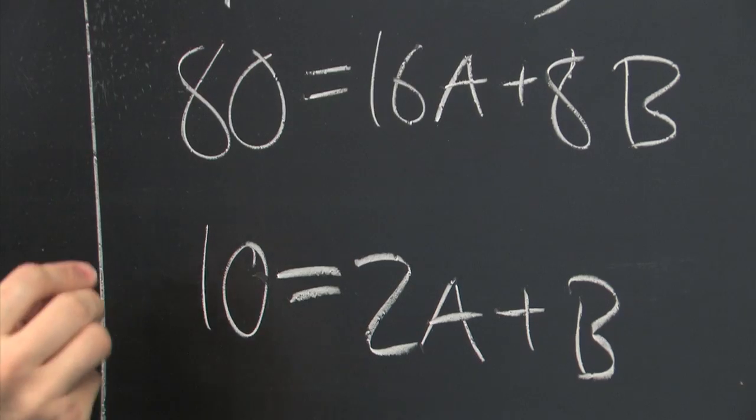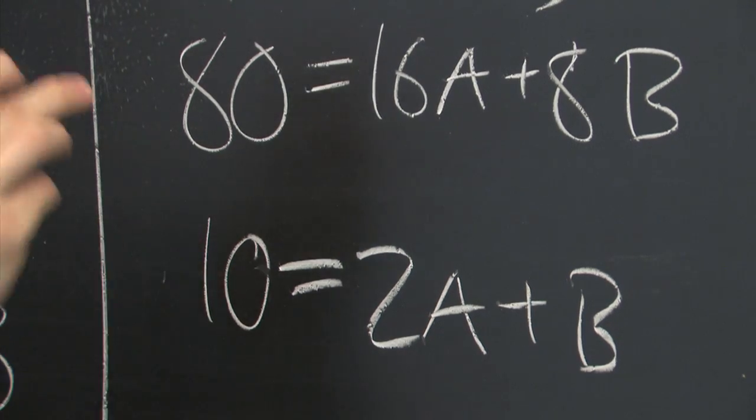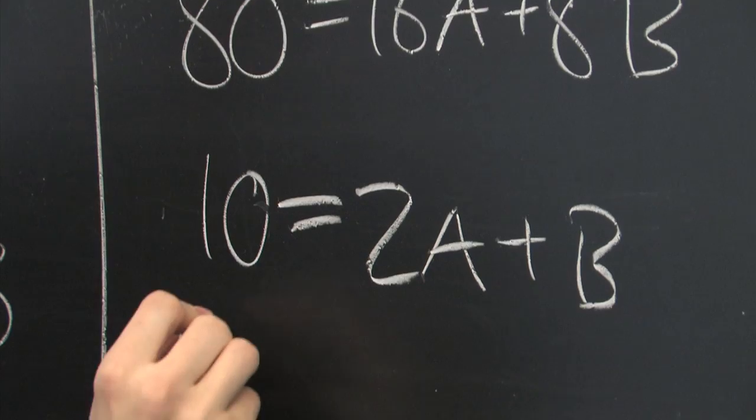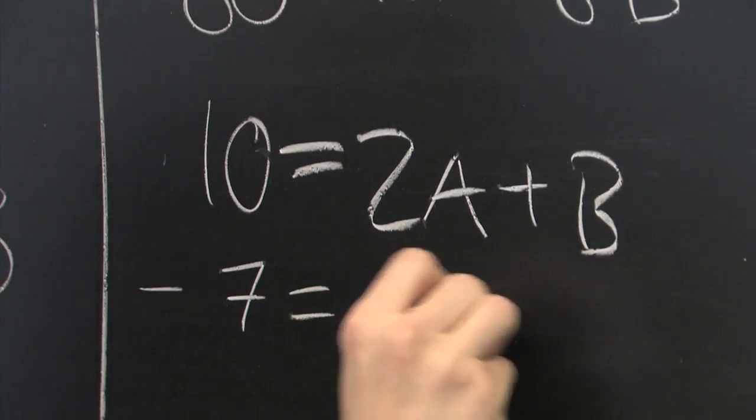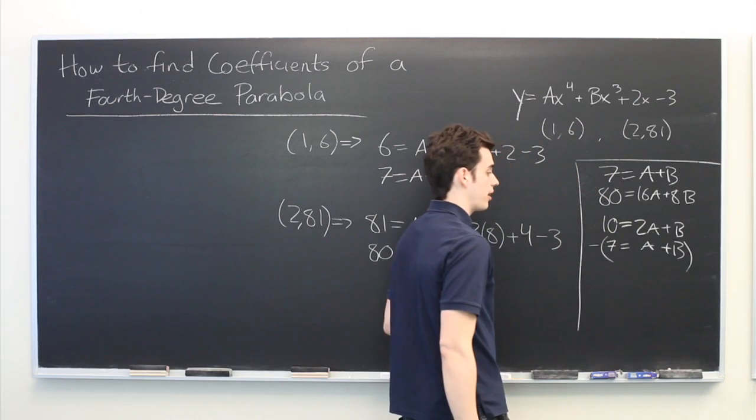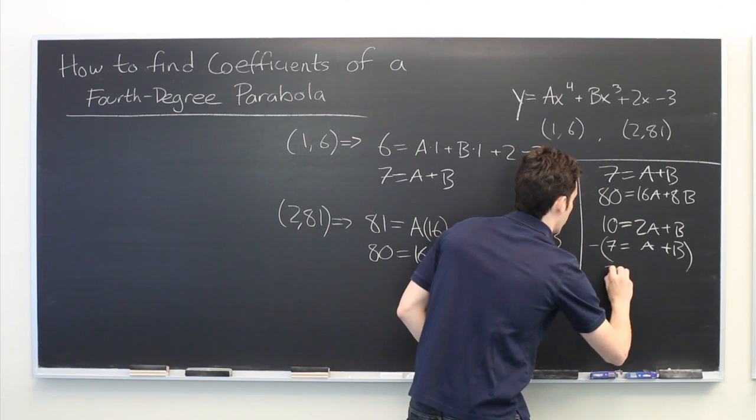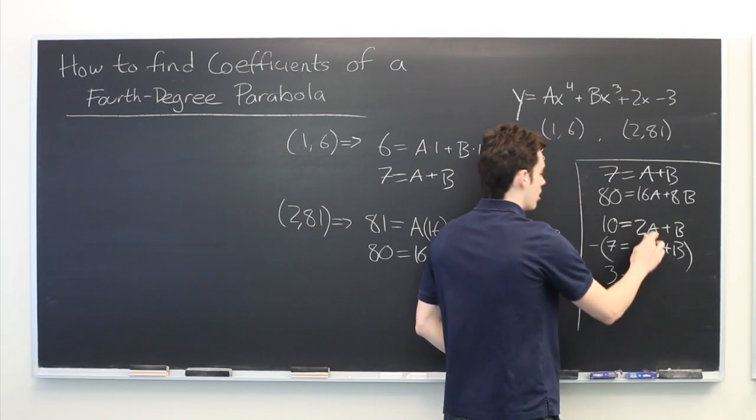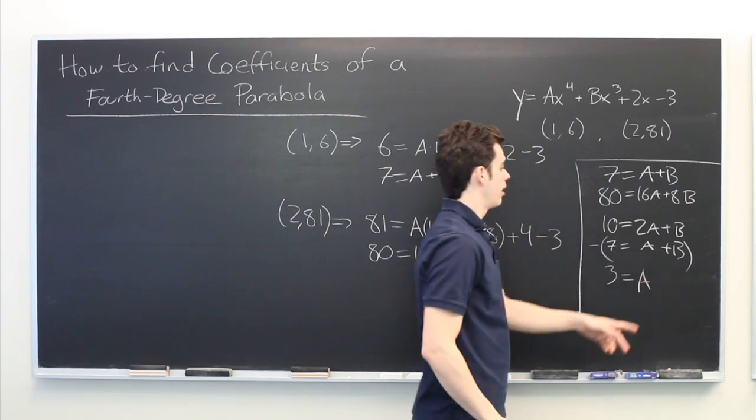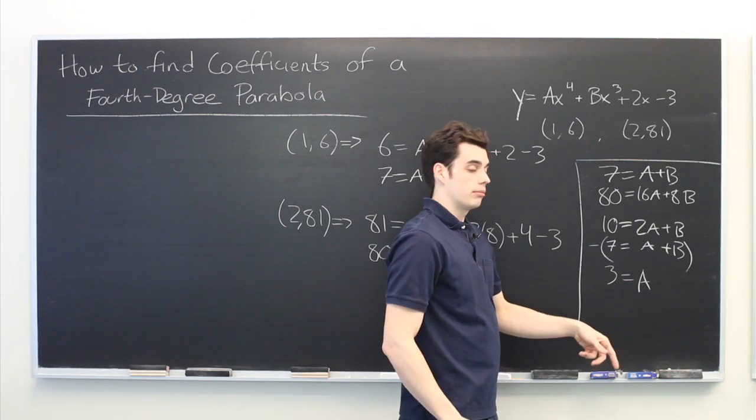So here we're going to take this equation and subtract from it this equation. So ten minus seven. And what that gives us on the left hand, we have three. Two a minus a is equal to a. And b minus b is zero.